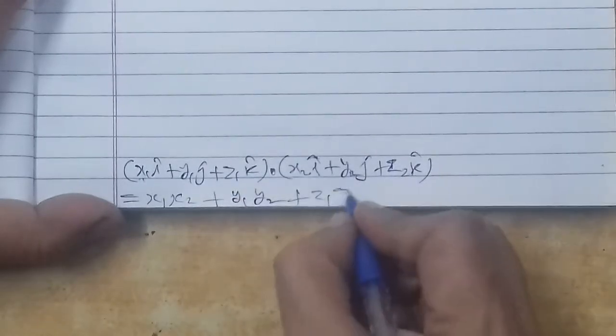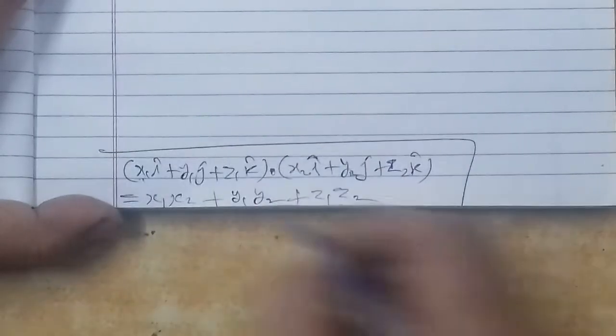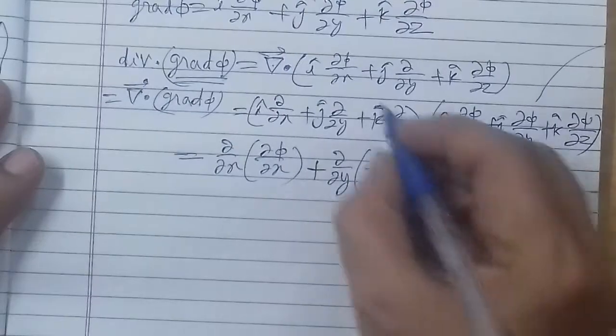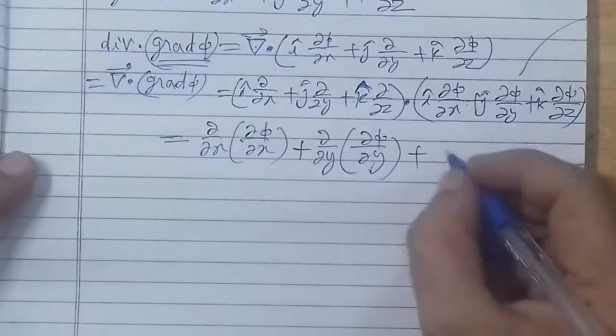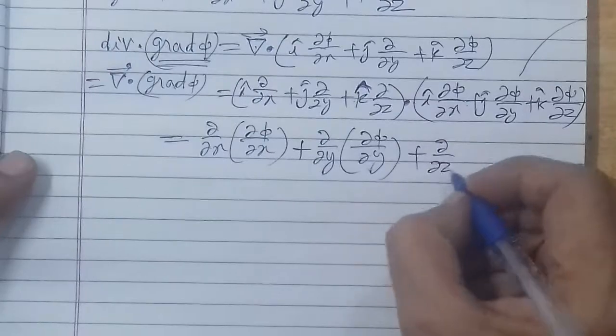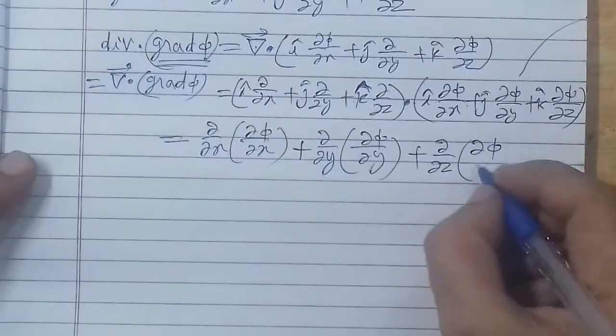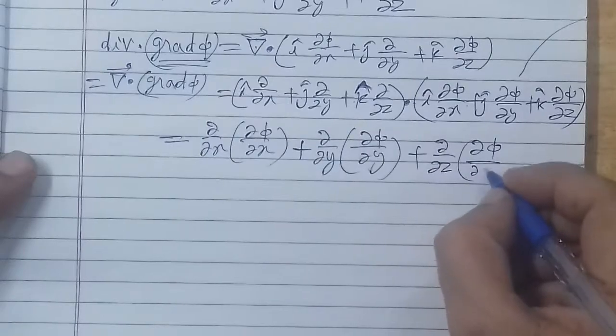So this formula we use here: the last term k cap multiplies only del phi over del z.